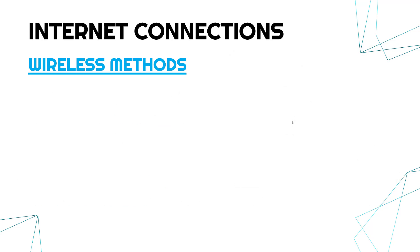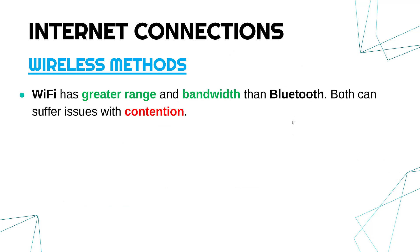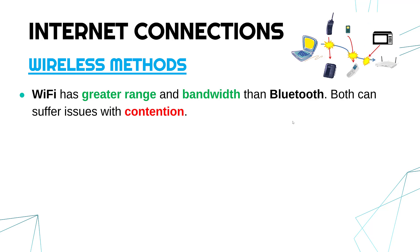Other wireless methods more likely to be used in your home are things like Wi-Fi and Bluetooth. Wi-Fi has got bigger range and bigger bandwidth than Bluetooth. Bluetooth is really for connecting devices right near you, like wireless headphones. Both can suffer issues with contention, especially if you're living in a busy flat block or have lots of people at home. You can have issues where devices interfere — if devices are on a similar frequency it can mean errors and things slow down. That's where they're contending with the network, though it's not always the case.